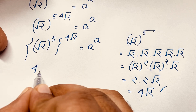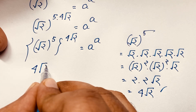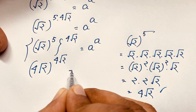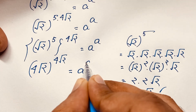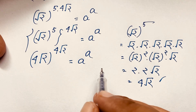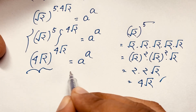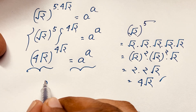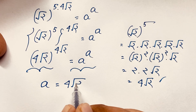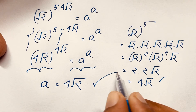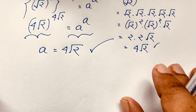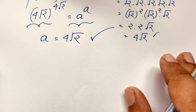So (√2)^5 = 4√2. Substituting back, we get 4√2 raised to the power 4√2, which equals a to the power a. Comparing both sides, a is equal to 4√2. This is our final answer to this interesting exponential math problem.